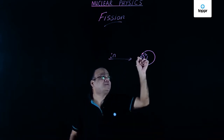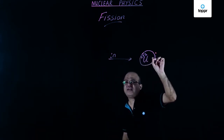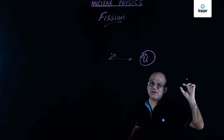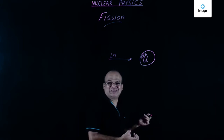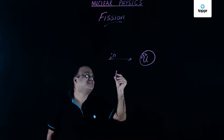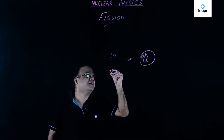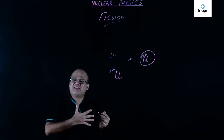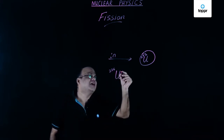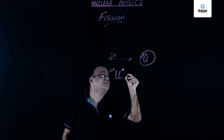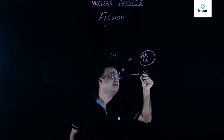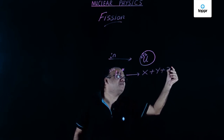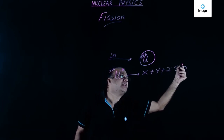When uranium-235 captures a slow neutron it becomes uranium-236. Write the mass number as 235 plus 1. This nucleus is unstable. It breaks into some fragment X plus fragment Y, and you get 2.5 neutrons on average.